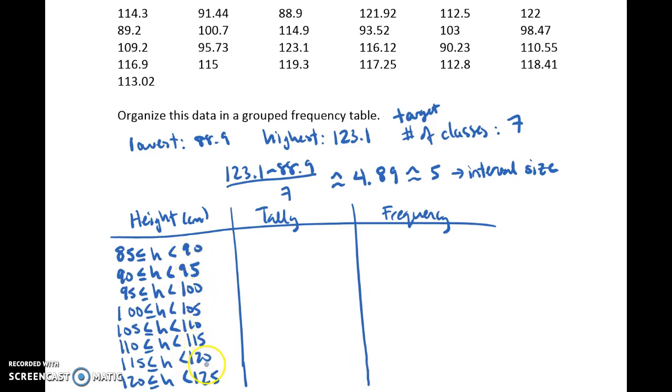1, 2, 3, 4, 5, 6, 7, 8. So I targeted 7, but because I started a little bit lower than the minimum, the smallest value, I ended up with an extra class, which is fine because I'm still within that 5 to 15 range. Then you want to go ahead and tally and then calculate out your totals, your frequencies.